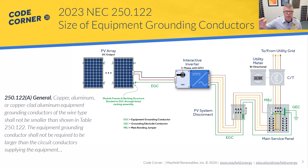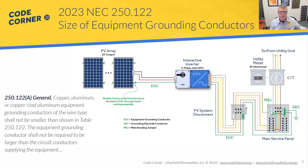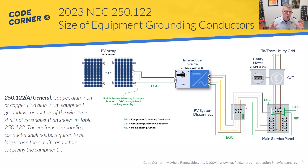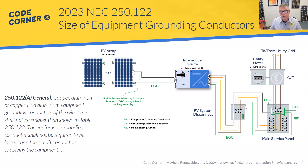Section 250.122(a) covers the types of equipment grounding conductors, and 250.122(b) talks about the increase in size. If it doesn't click, read 250.122(b) — it says if you increase your conductor sizes you have to increase the EGC — and then 690.45 says for PV systems you actually don't have to do that. A big part of the reason is that PV systems are current-limited; we don't have an infinite amount of current behind our sources, so upsizing the EGC doesn't do much because the available fault currents simply aren't that high.